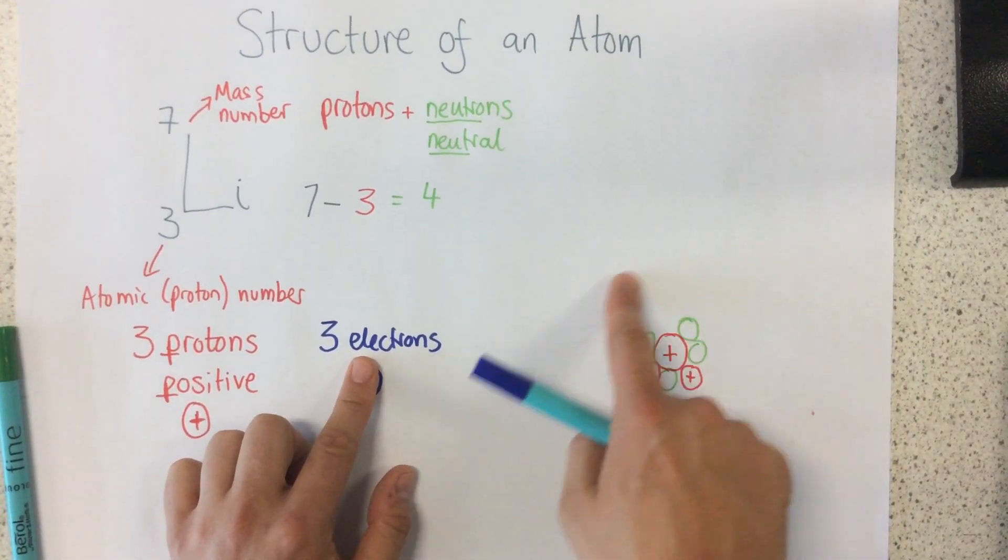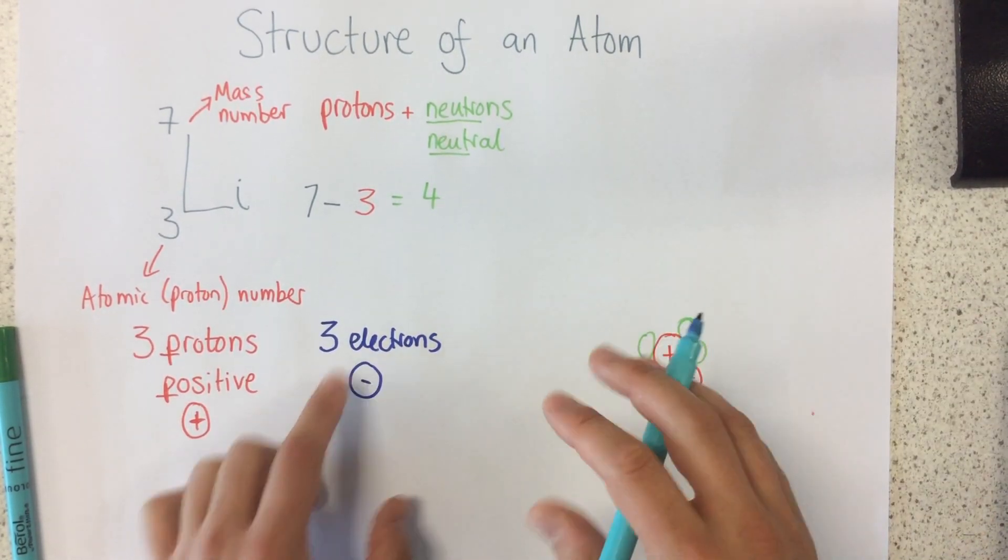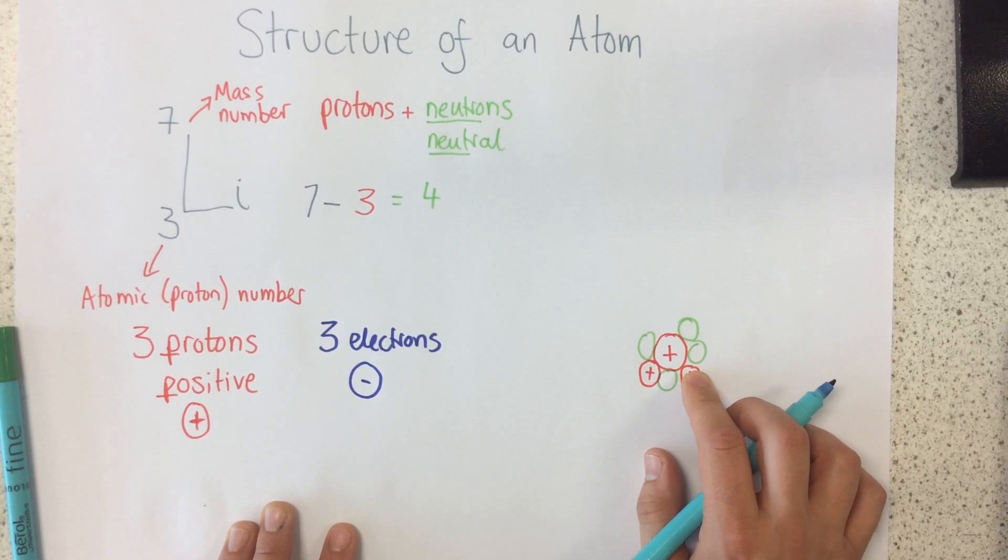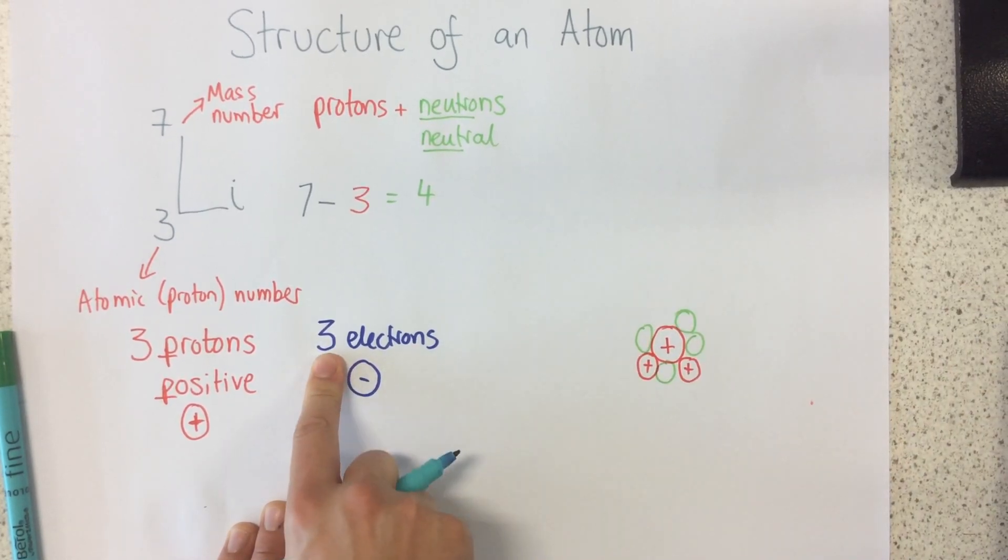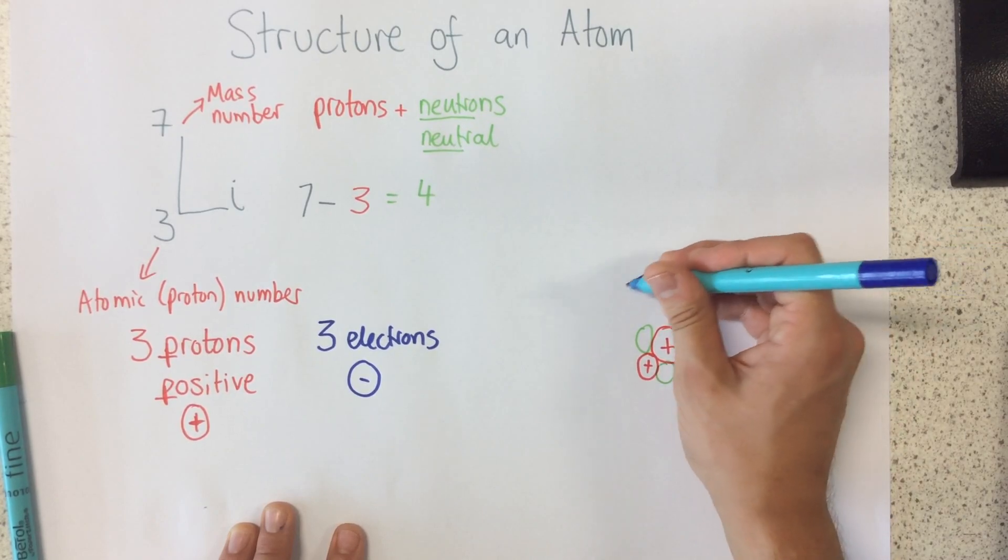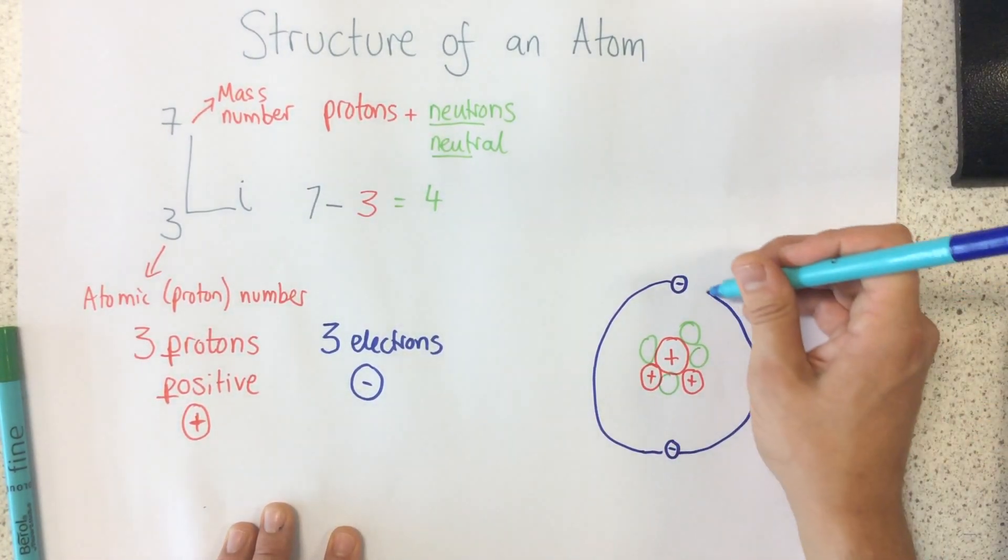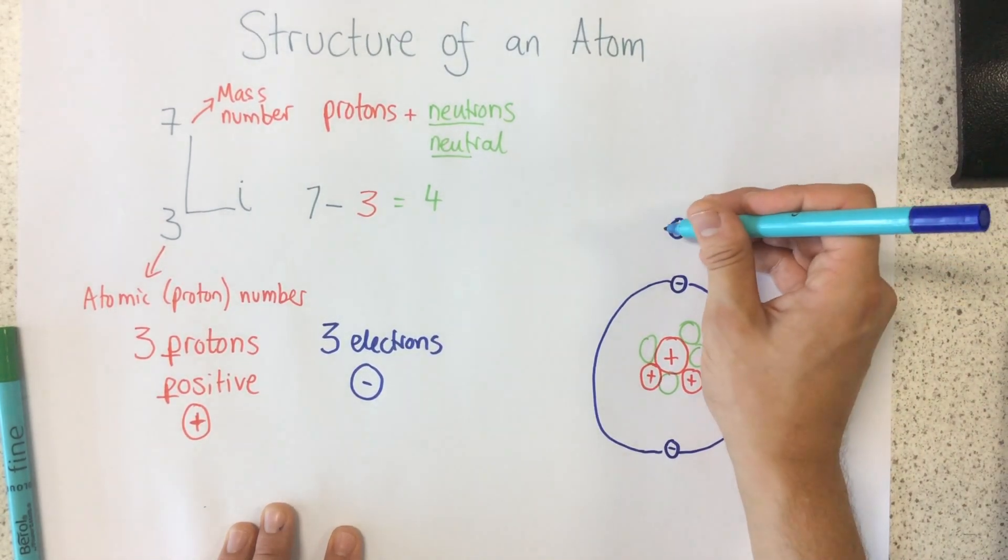Now, electrons go in shells around the nucleus. And they're arranged in a certain way that we're not going to go through in this particular video. But as you can see, we've got 3 electrons. So in the first shell, I've got 2. And in the next one, I've got my third one.